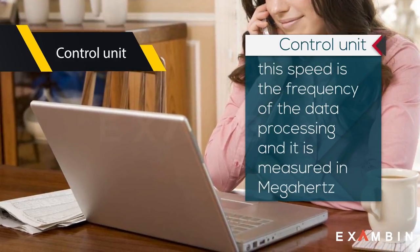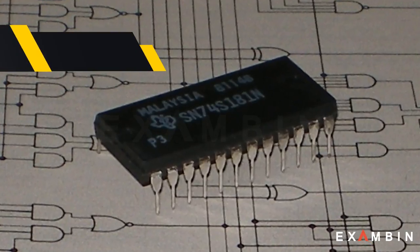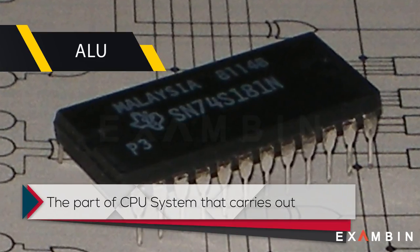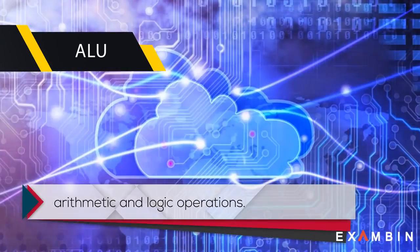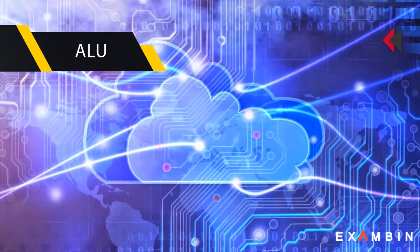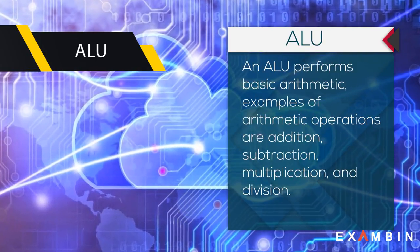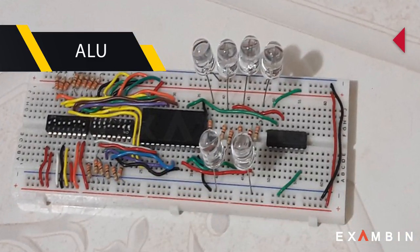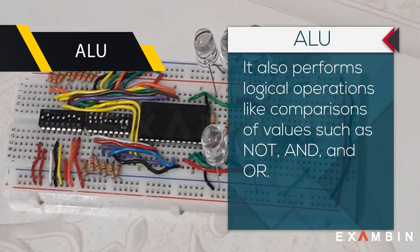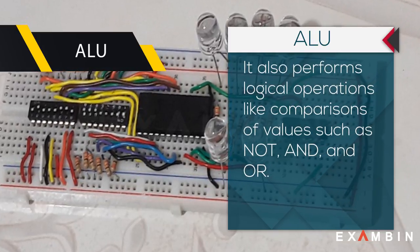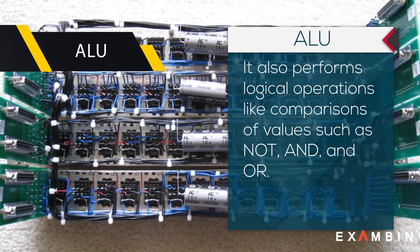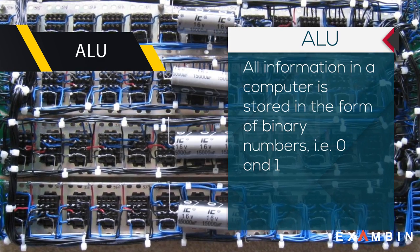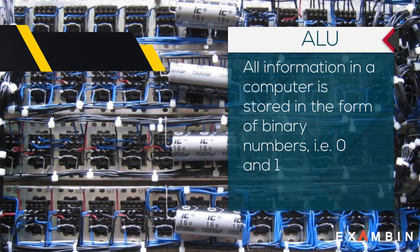The Arithmetic Logic Unit is the part of the CPU that carries out arithmetic and logic operations. It performs basic arithmetic operations such as addition, subtraction, multiplication, and division. It also performs logical operations like comparisons of values such as NOT and OR. All information in a computer is stored in binary form, that is 0 and 1.